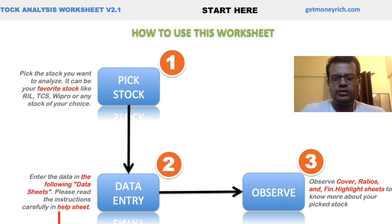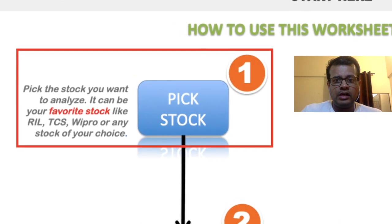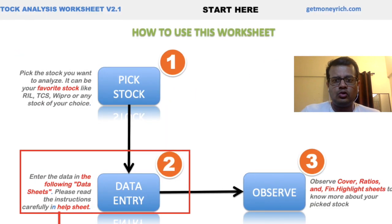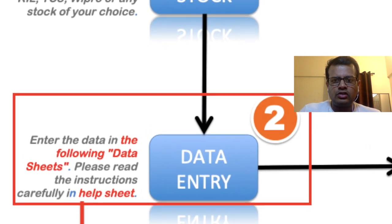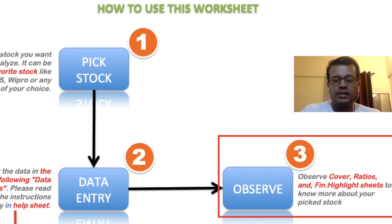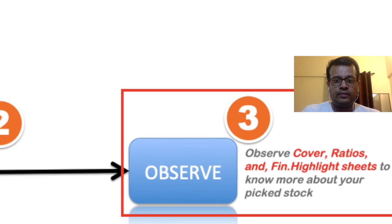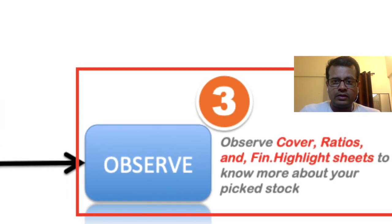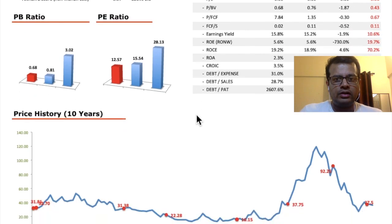How to use this worksheet? There are basically three main steps. First, the user must decide which stock they want to analyze. Step two, the user must feed the relevant data related to this stock into the worksheet. And step three, once the data is fed, the next step is to observe the cover sheet. The cover sheet is the final report of the stock — this is where the user will get the intrinsic value, overall score, and other relevant information related to the stock.